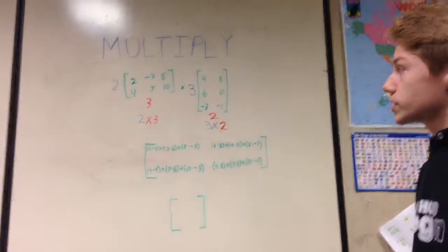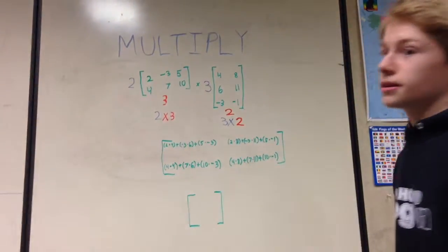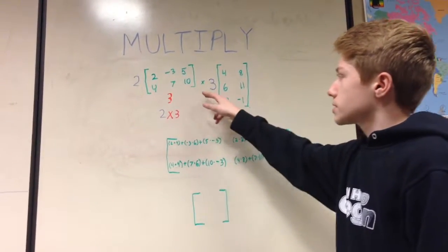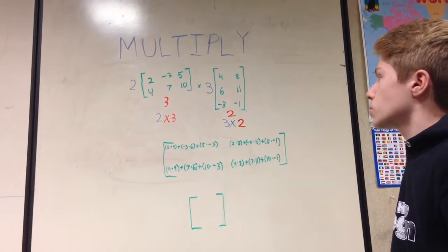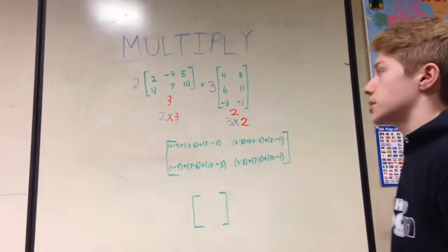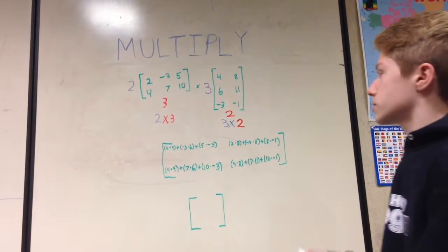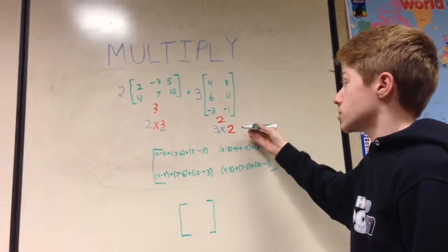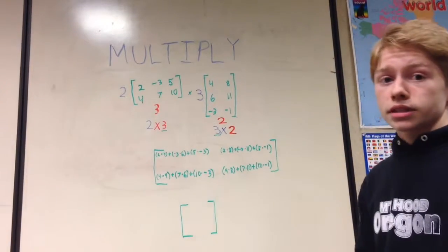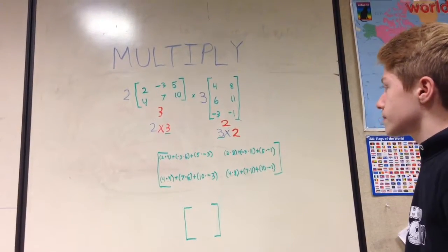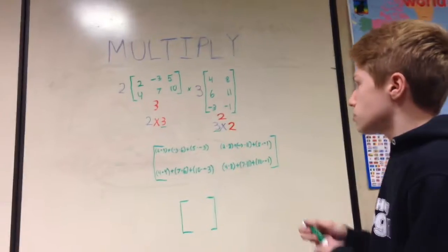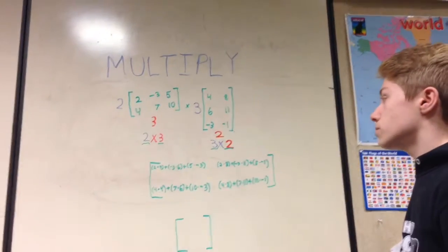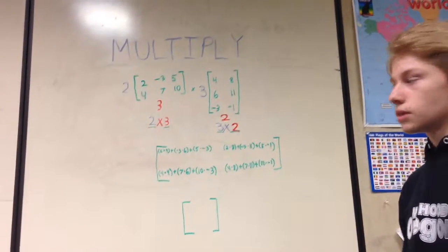Hi everybody, my name is Louis and I'm going to be teaching you how to multiply matrices. When multiplying matrices you have to make sure that the number of columns in the first matrix corresponds with the number of rows in the second matrix. This matrix is two by three — the number of columns is three — and this is a three by two — the number of rows is three — so that's going to be fine to multiply. Since you have twos here and here, that means you're going to have a two by two matrix when you're done multiplying.